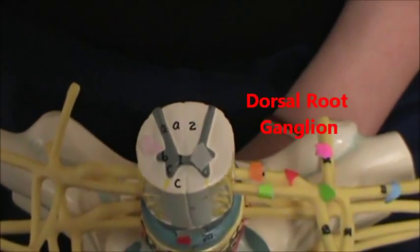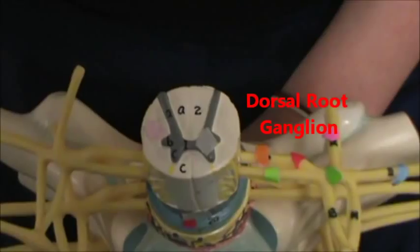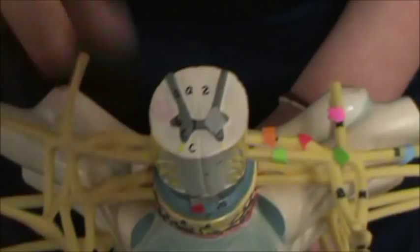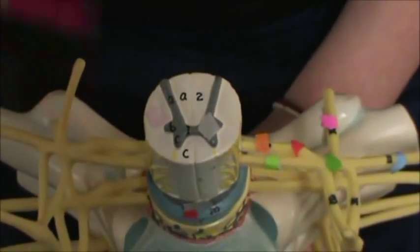And then in red we have the dorsal root ganglion. And the sticker kind of covers up the bulge on this side. So if you look on this side, this bulge right here is the dorsal root ganglion. That's where all the cell bodies are located.